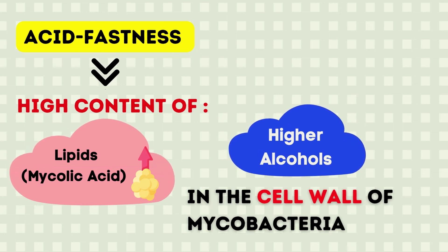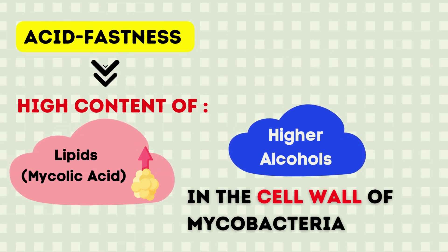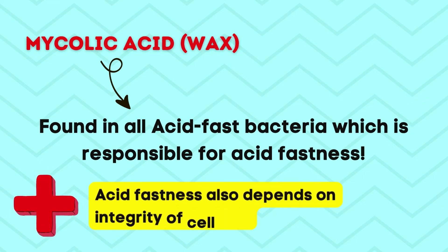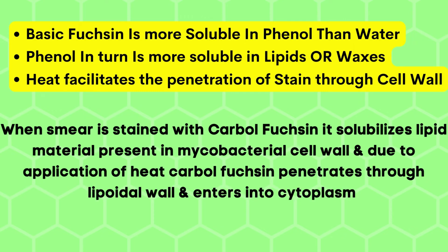Not only mycolic acid but also high alcohols present in the cell wall of mycobacteria are responsible for acid fastness. They contain mycolic acid and wax, which are found in all acid fast bacteria and are responsible for acid fastness. This acid fastness also depends on the integrity of the cell wall. The basic dye, carbol fuchsin, is used in phenolic form because it is more soluble in phenol than water, and phenol in turn is more soluble in lipids and waxes. Therefore, the carbolic solution of the basic dye is preferred.